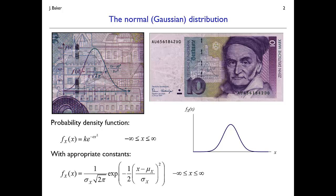This distribution has a classic bell shape. The basic form of the equation is that the probability density function is e to the minus x squared, with just a couple of constants k and c to normalize things. This thing is defined from negative infinity to infinity, although it tends to take values with high probability close to the mean.